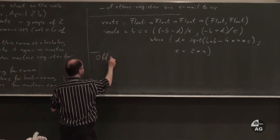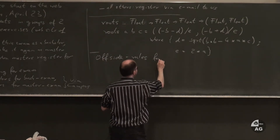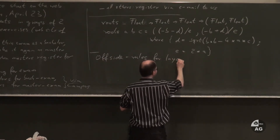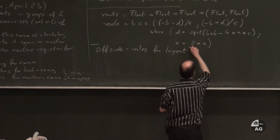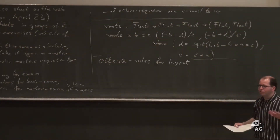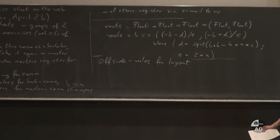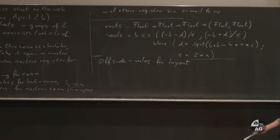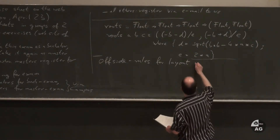This is called the offside rule for the layout of programs. It is something special to Haskell, not the case in other functional programming languages. In other languages, indentation is just good programming style, but in Haskell you are more or less forced to do it correctly.